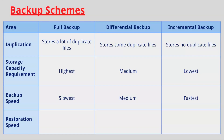And lastly, restoration speed: a full backup has the fastest restoration speed, a differential backup has a medium restoration speed, and an incremental backup has the slowest restoration speed. The advantage of a full backup scheme is its fastest restoration speed; however, that comes at the trade-off of the highest storage capacity requirement and the slowest backup speed. The advantage of an incremental backup scheme is the lowest storage capacity requirement and the fastest backup speed, but its main disadvantage is the slowest restoration speed. A differential backup has advantages and disadvantages relative to both. It's all about the business and determining which scheme makes sense for its operations.